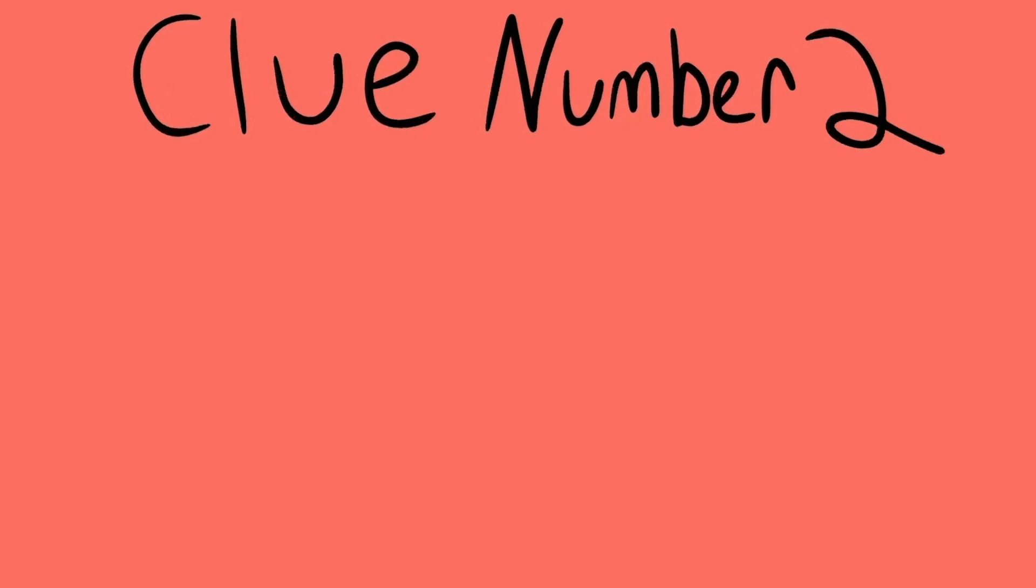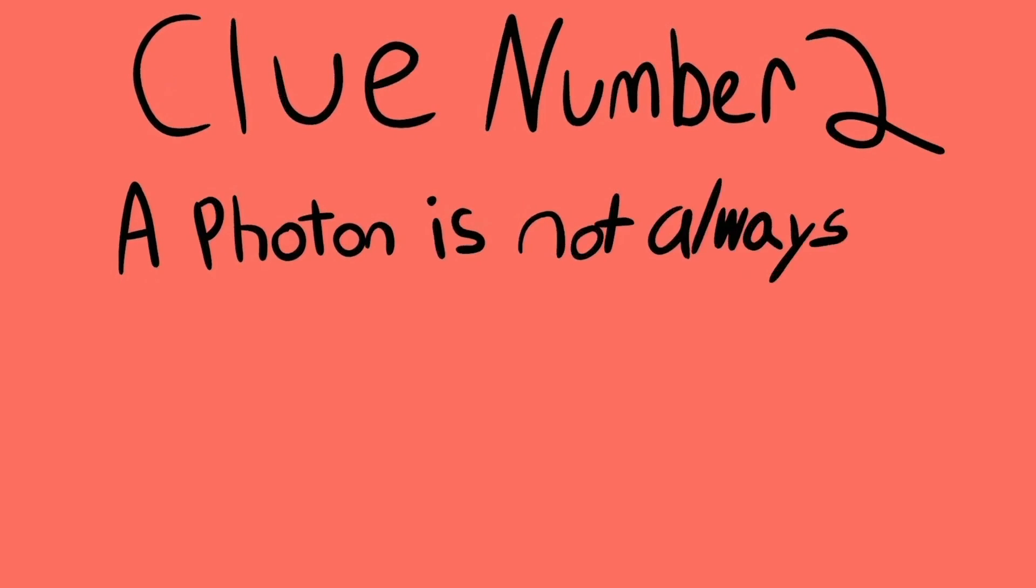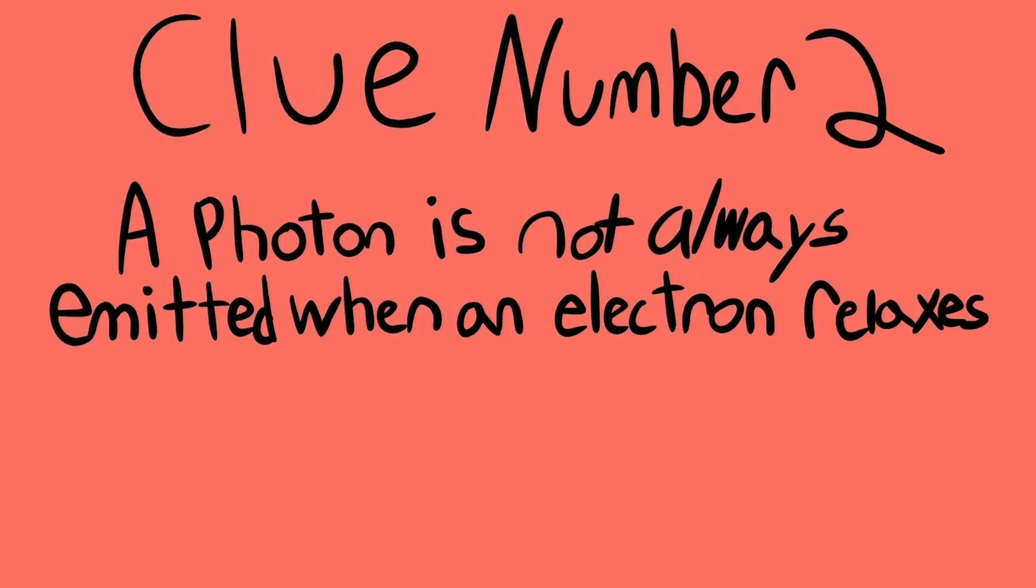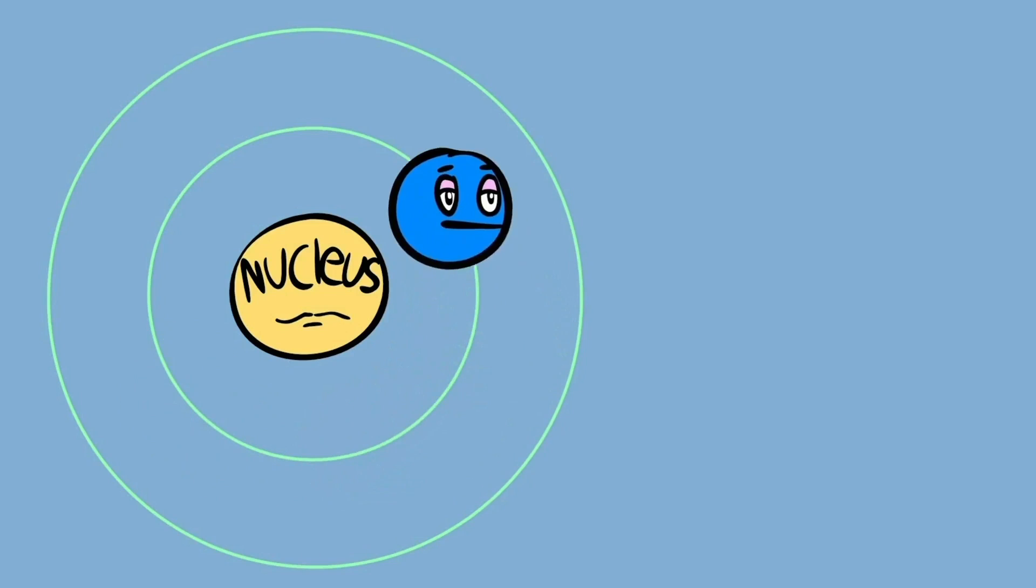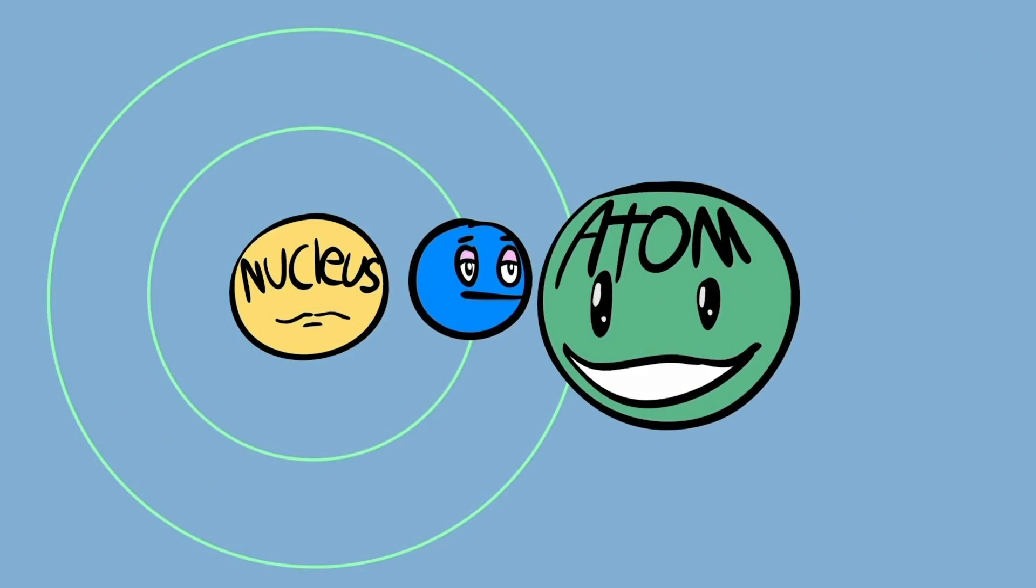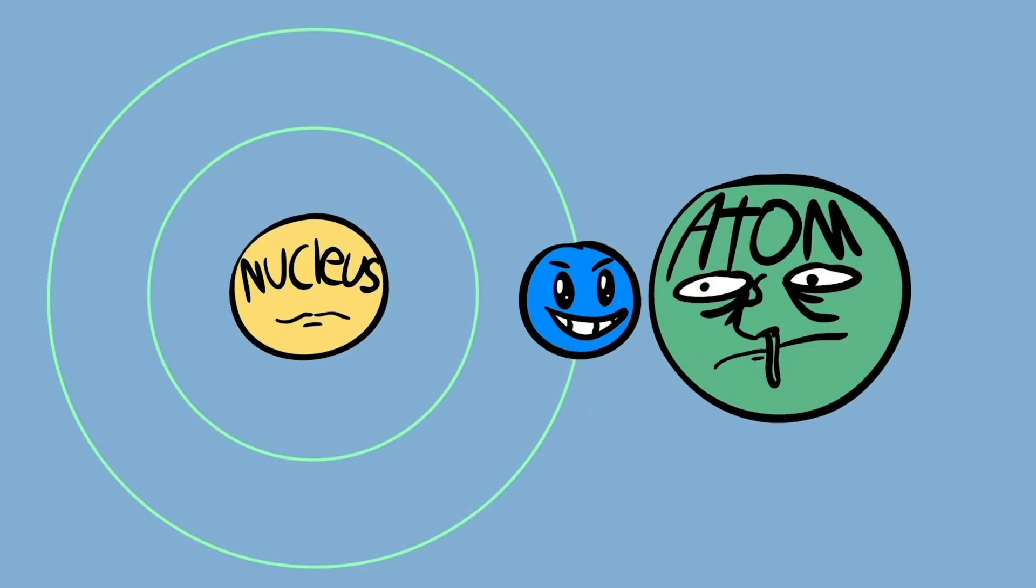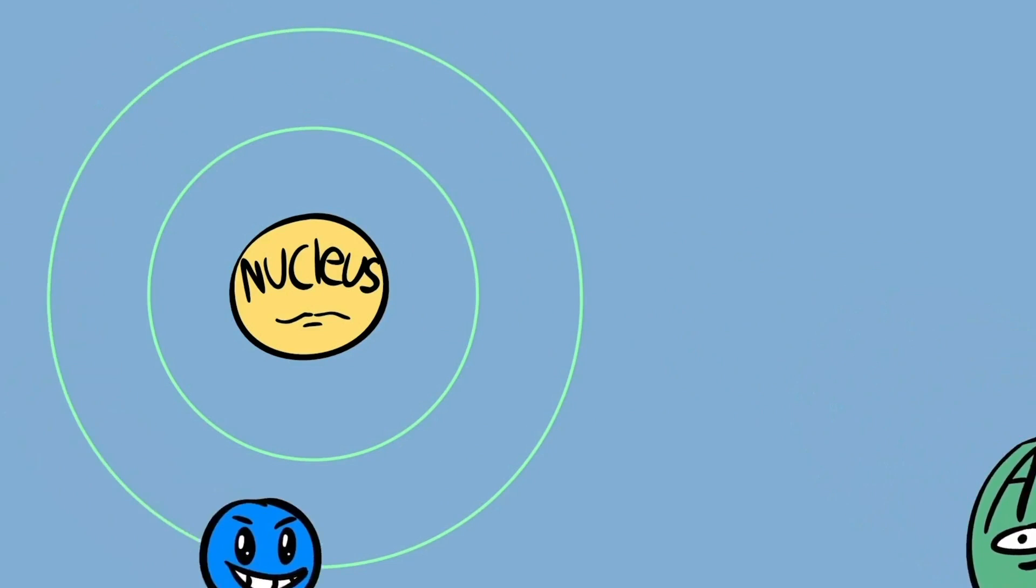Clue number two: a photon is not always emitted when an electron relaxes to a lower energy state. We just talked about how a photon can excite an electron, but electrons can also be excited by atoms that bump into them. Instead of absorbing the atom, there's a transfer of kinetic energy. This is called excitation by collision.